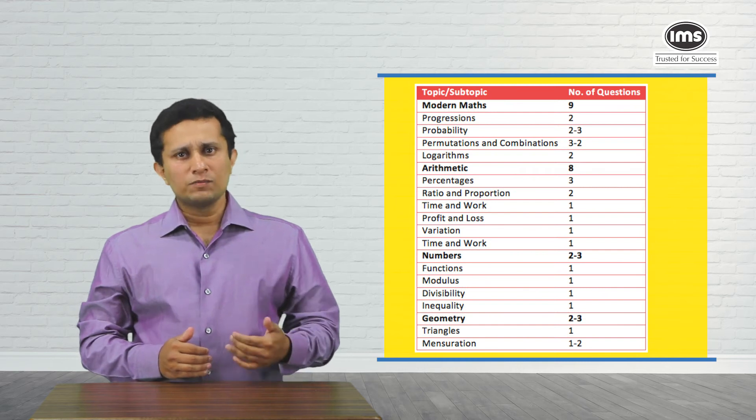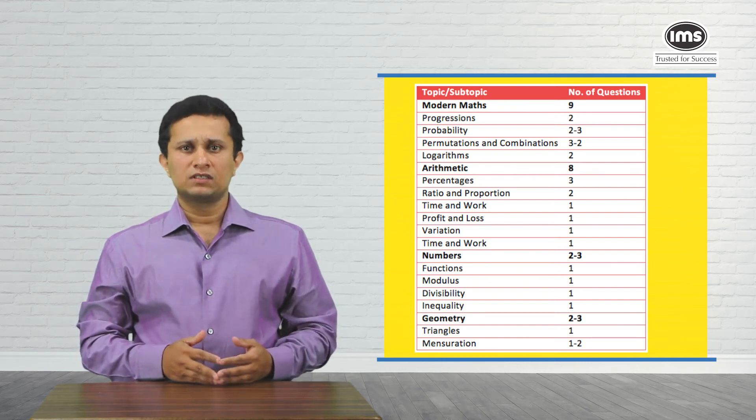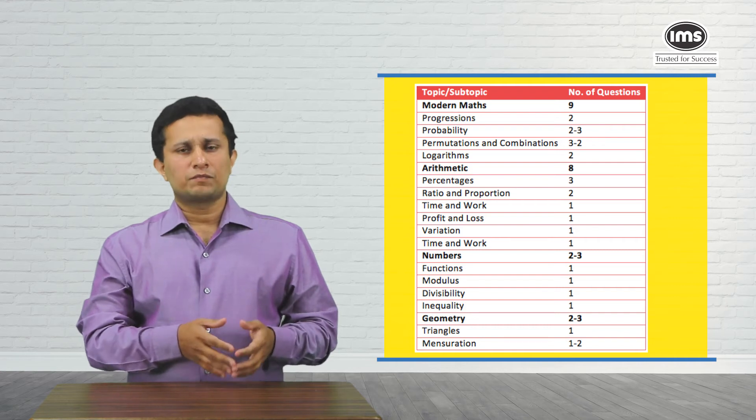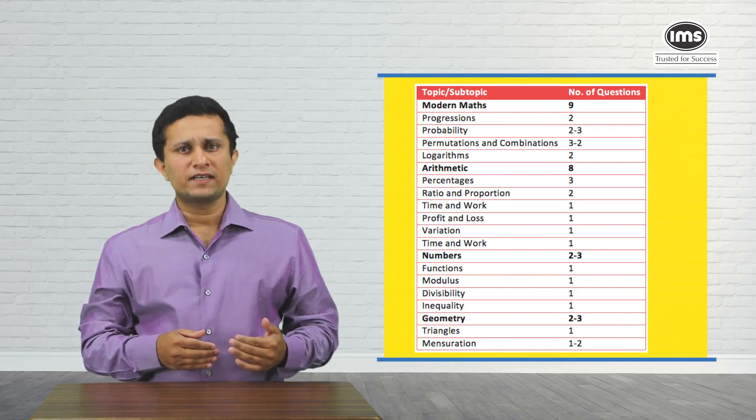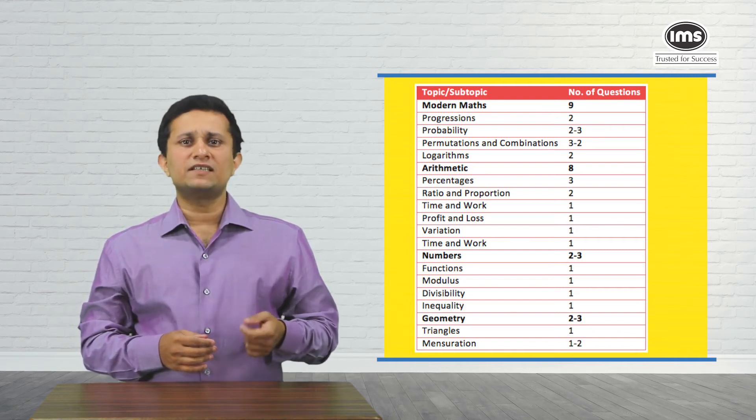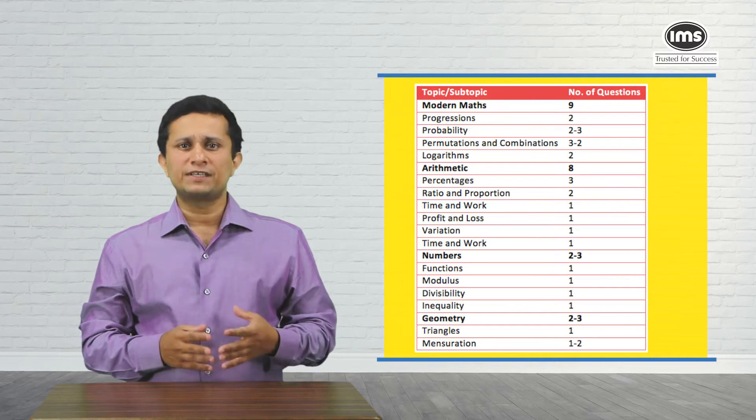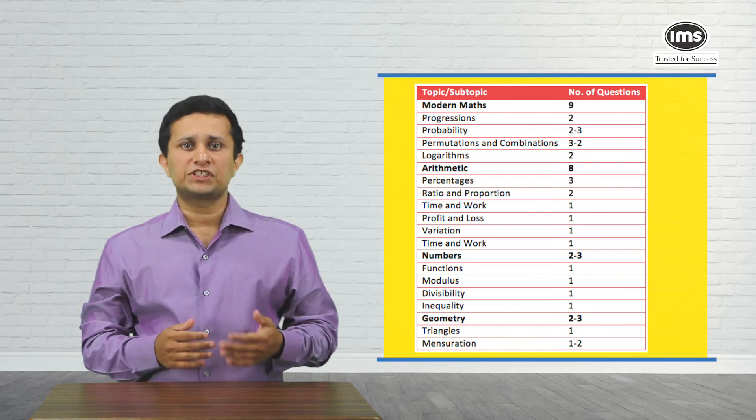Finally, coming to problem solving. Problem solving, as we saw, had 23 questions. This was dominated by modern math and arithmetic with a little representation from numbers and geometry. There was hardly any question from algebra.